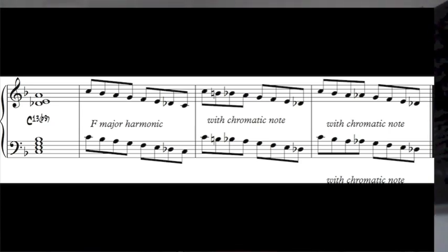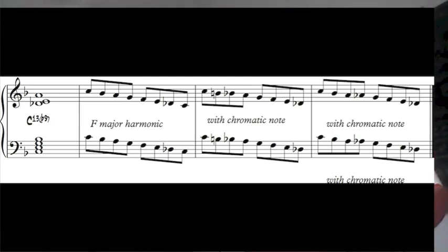Just use the same chromatic passing notes as before. So this is C7-b9-13. It's good to practice it in time — to play over C7-b9-13 in a very natural way. Think about F as a tonality: F major harmonic, with emphasis on C7-b9.